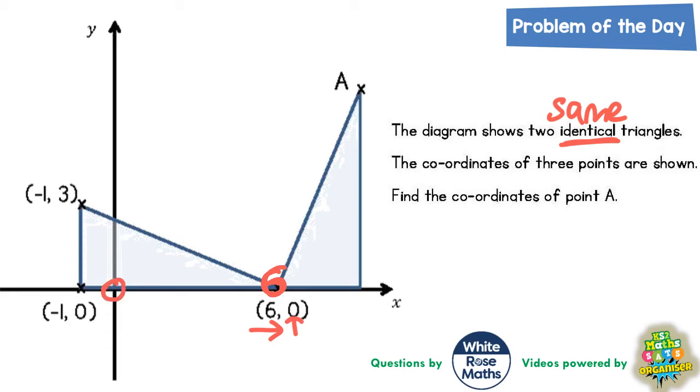The minus 1, 0, well the minus 1 is 1 to the left and nothing up or could be nothing down. So this cross must be minus 1 to the left on the x-axis.